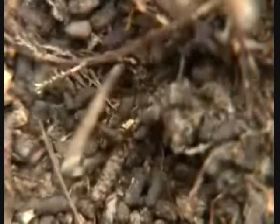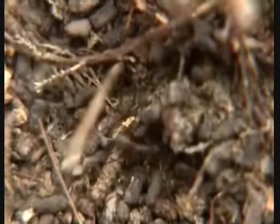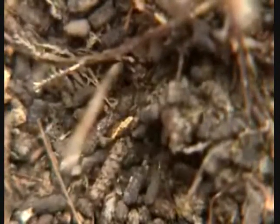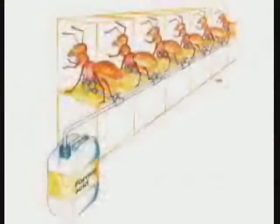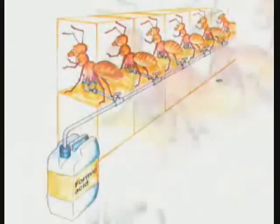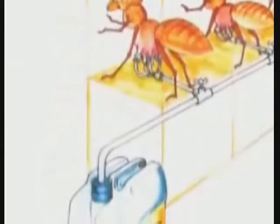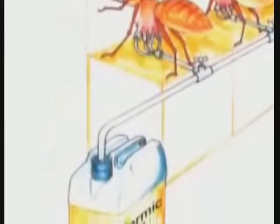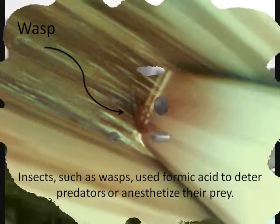John Ray first distilled formic acid in 1671 by heating dead ants in a flask and collecting the distillate, a procedure that, thank goodness, together with this milking system, didn't catch on.